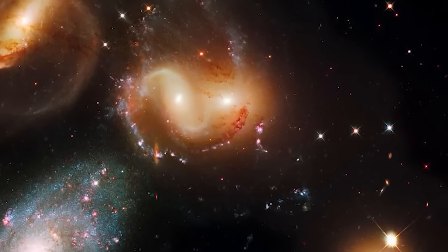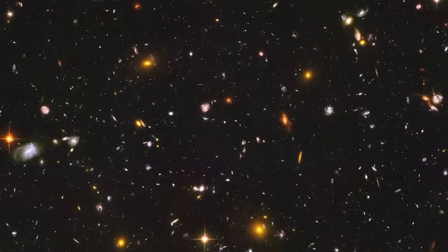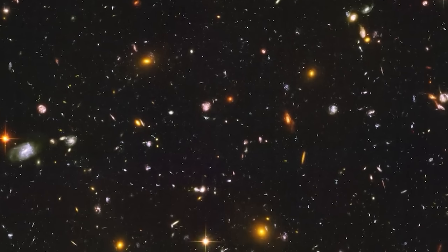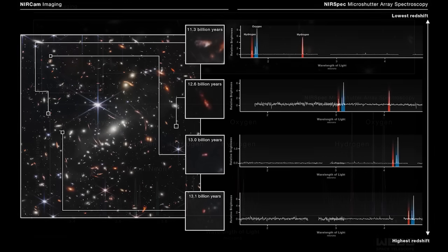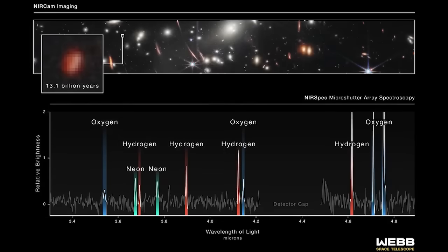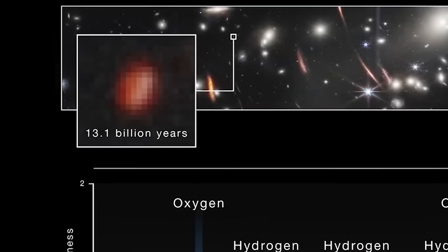Returning to the first James Webb image, SMACS-0723 is a compact cluster of galaxies, located more than 4 billion light-years from Earth. The photographed area is actually no larger than a grain of sand. Amazing, isn't it?